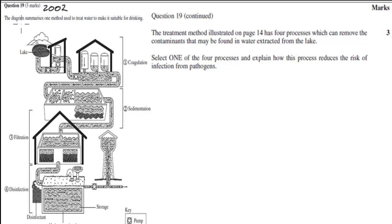The question says: the diagram summarizes one method used to treat water to make it suitable for drinking. This is that diagram. The treatment method illustrated on page 14 has four processes which can remove contaminants that may be found in water extracted from the lake. Select one of the four processes and explain how this process reduces the risk of infection from pathogens. And that's worth three marks.